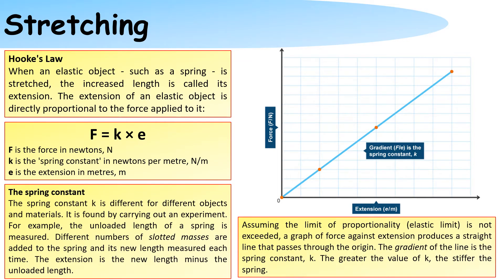The spring constant k is different for different objects and materials. It is found out by carrying out an experiment. For example, the unloaded length of a spring is measured, different numbers of slotted masses are added to the spring, and the new length is measured each time. The extension is the new length minus the unloaded length.